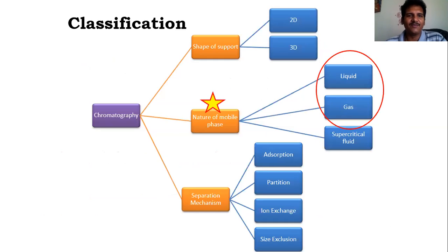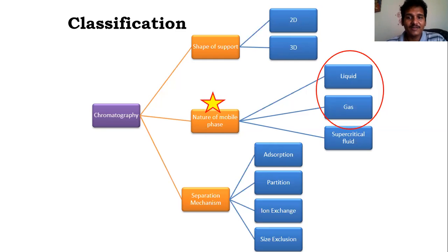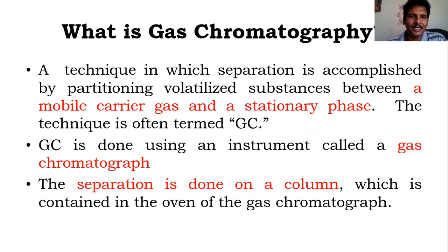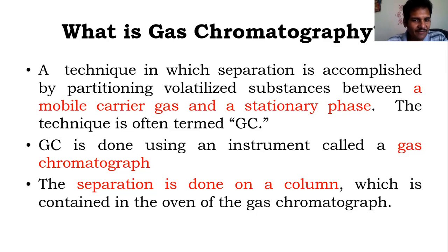Chromatography can be broadly classified based on the nature of the mobile phase — liquid, gas, or supercritical fluid — the nature of the support (2D or 3D), or the type of separation mechanism such as adsorption, partition, or ion exchange. In gas chromatography, the mobile phase is a gas, the separation is done in a column kept in an oven, and the oven plays an important temperature-related role we will explore shortly.